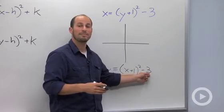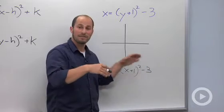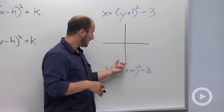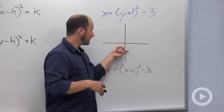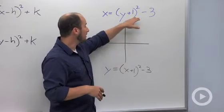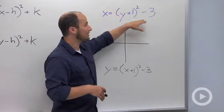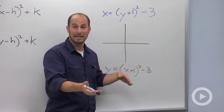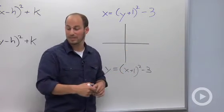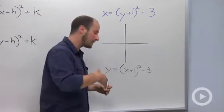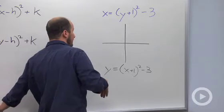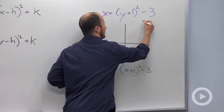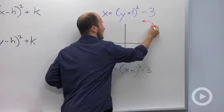The minus 3 moves the graph down 3, so that is taking the y value down 3. If we are dealing with the x equals form, it's going to do the same thing — instead of taking y down 3, it takes x down 3. So what you're doing is making the x 3 units smaller, and we would take our vertex and move it back 3.